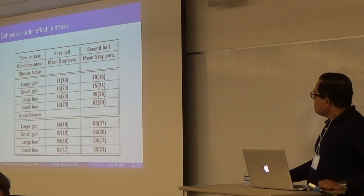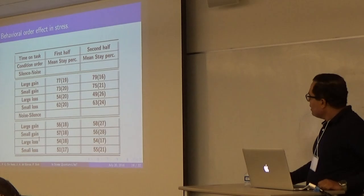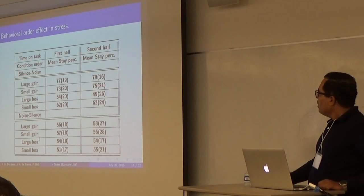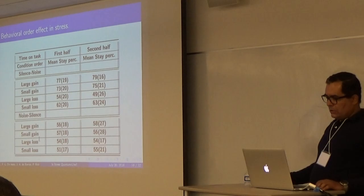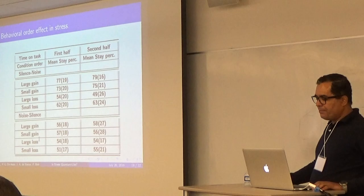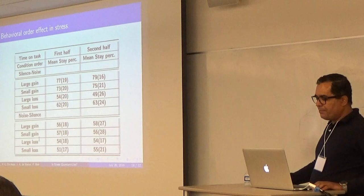So now I'm showing the table to show, depending on the order, and they put silence or noise, how much time did the subject stay using the same strategy. So in the first table, you see a situation where first the subject makes the experiment in silence without any noise. And the second half with noise. And the second table reverses the order. First noise, and after silence.